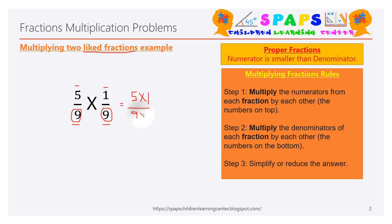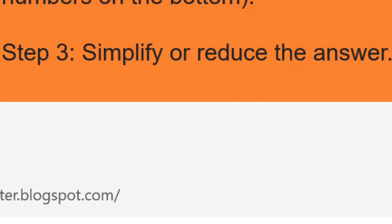Step one: multiply the numerators of each fraction by each other — that means five and one. Step two: multiply the denominators of each fraction by each other — that means nine multiply by nine. You will get five on top, and nine times nine equals 81 on the bottom. The last step is to simplify or reduce the answer if possible.